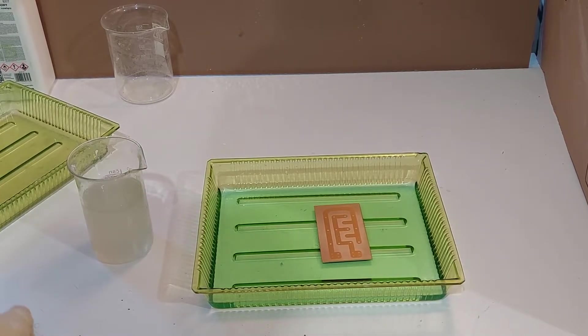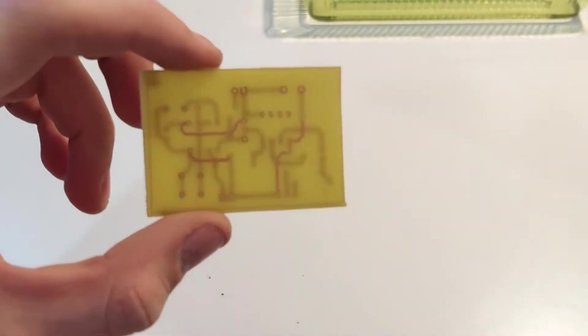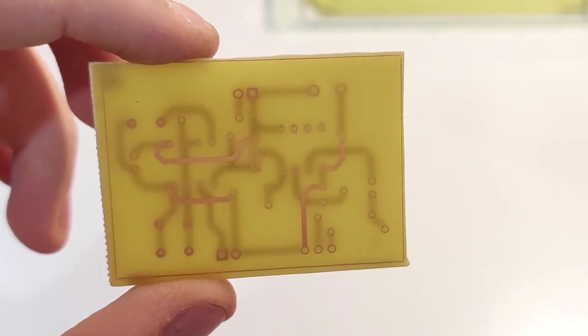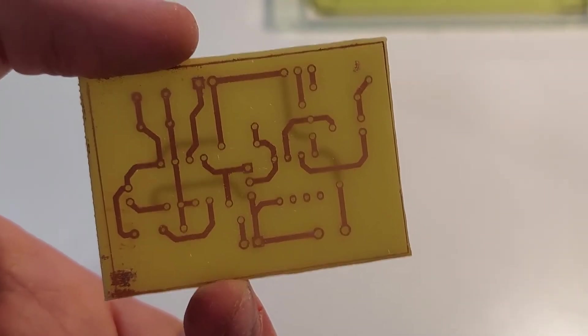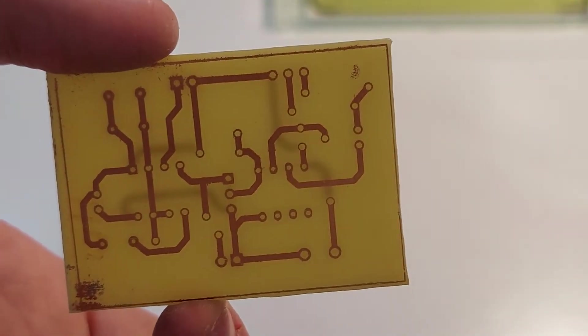So now let's focus on our double sided PCB we just made. And as you can see the only thing left on there is the copper traces we needed on both sides. And they match up very well which is pretty good for this simple homemade PCB way.